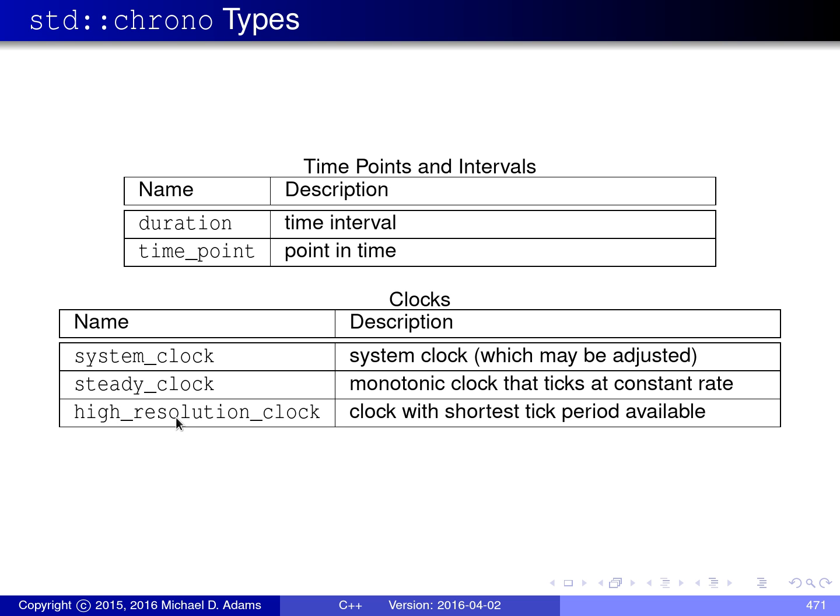And then lastly, we have high_resolution_clock, which is the clock that has the finest granularity of time measurement that's available on the system. Typically, if you want to do very accurate timing measurements, this might be the clock that you would choose.